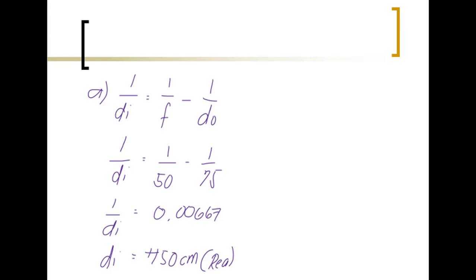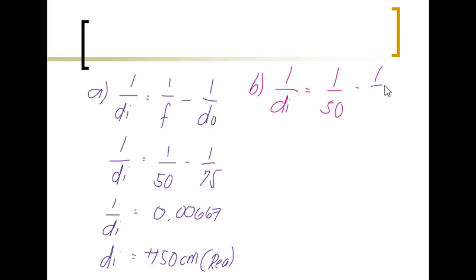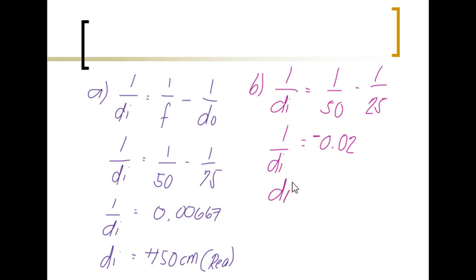For part B, the object is placed 25 centimeters from the same lens. Using 1 over Di equals 1 over 50 minus 1 over 25 gives negative 0.02. Taking the reciprocal, the distance of the image is negative 50 centimeters. Since it is negative, the image is located on the same side as the object — it is a virtual image.